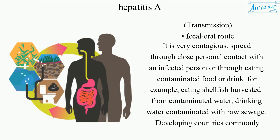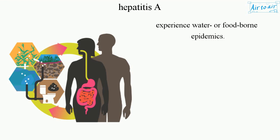Transmission occurs via the fecal-oral route. It is very contagious, spread through close personal contact with an infected person or through eating contaminated food or drink — for example, eating shellfish harvested from contaminated water, or drinking water contaminated with raw sewage. Developing countries commonly experience water or foodborne epidemics.